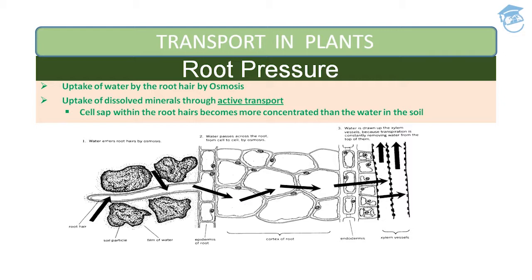Water passes across the root from cell to cell by osmosis through the cortex, then the endodermis, and finally into the conducting vessel which is the xylem. Water is then drawn up the xylem vessel because transpiration is constantly removing water from the top. Various ions are actively transported into the vascular tissue of the root, water follows its potential gradient, increasing pressure inside the xylem — this positive pressure is called root pressure — and it pushes water up to a small height in the stem.